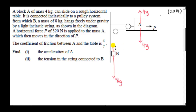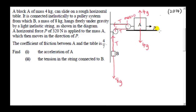Looking at the forces due to the string: suppose the force on B due to the string has magnitude T, vertically upward. Since the tension is the same throughout the string, the force on the movable pulley due to the string is 2T. The pulley is assumed to have zero mass. A horizontal force P of 320 N is applied to the mass at A.